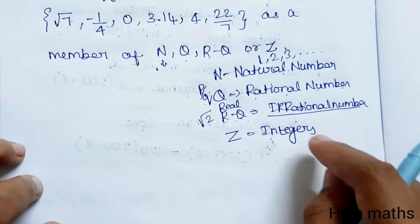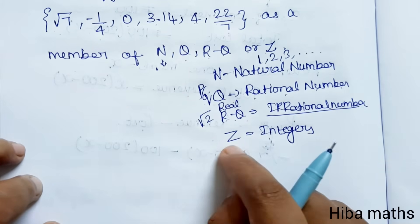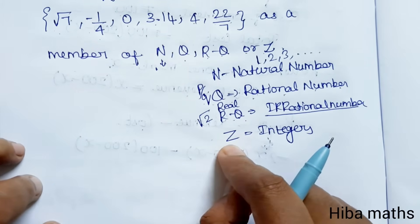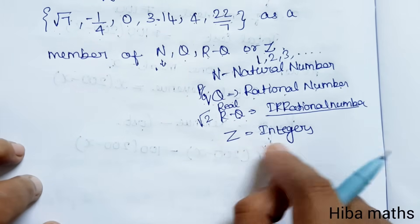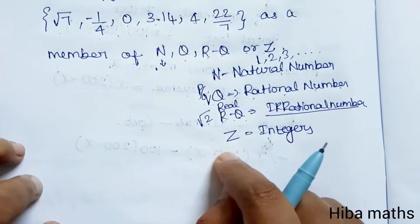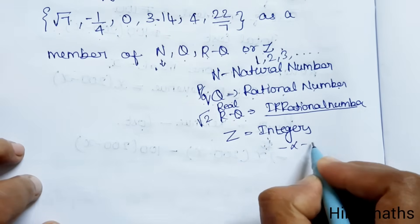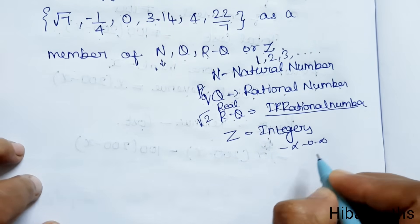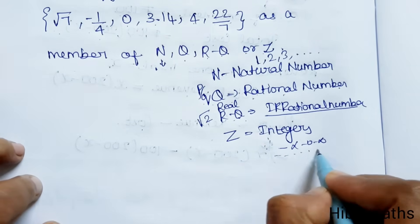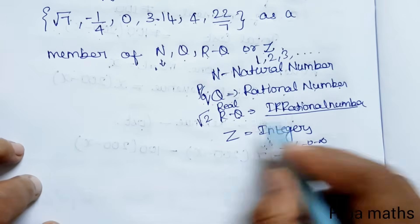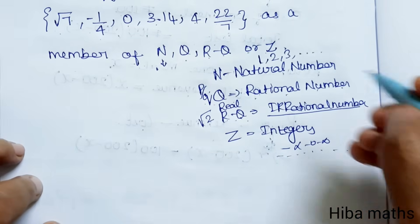Z is an integer. Integers range from minus infinity to infinity — they include negative numbers, 0, and positive numbers. That covers all integers on the number line.